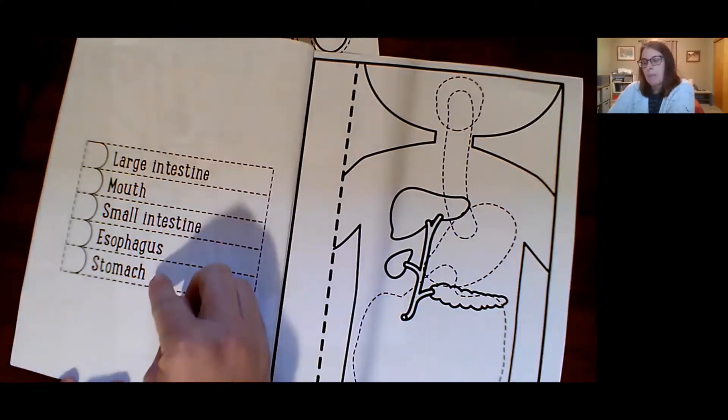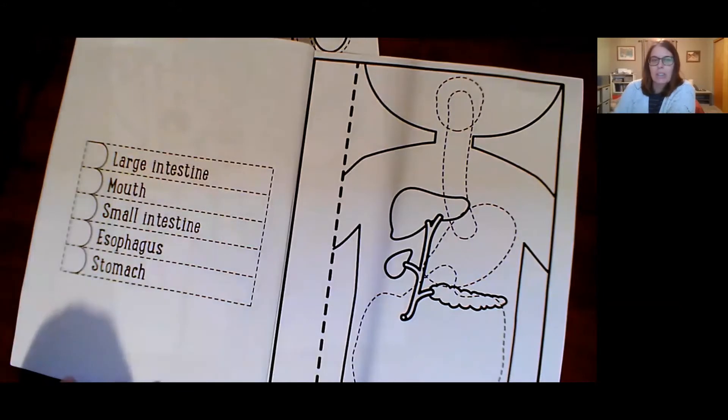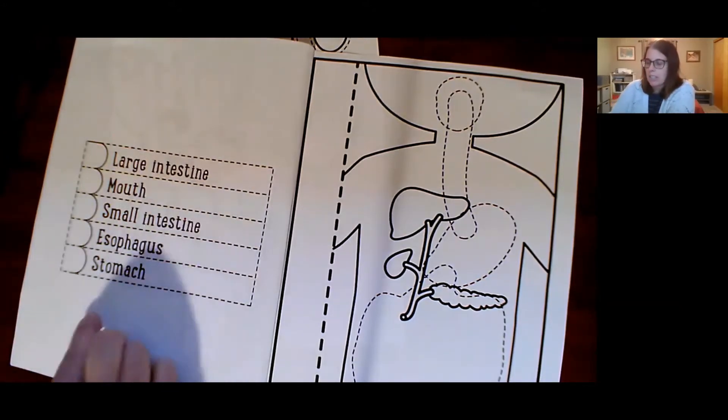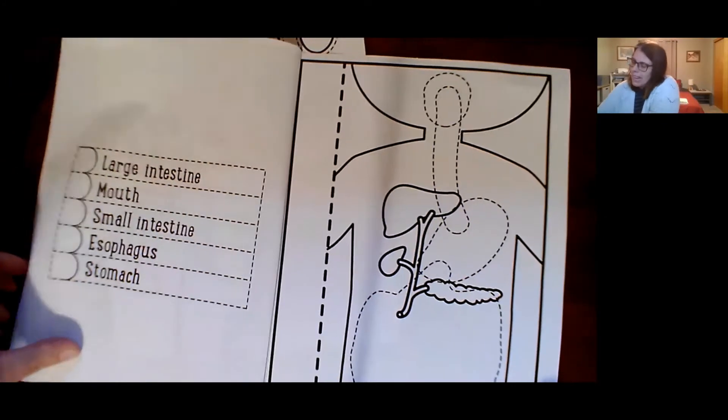And we're going to label those with one, two, three, four, five with numbers for the order that food goes through these different parts of the digestive system. So we'll kind of label them in order. So that's what we'll do today.